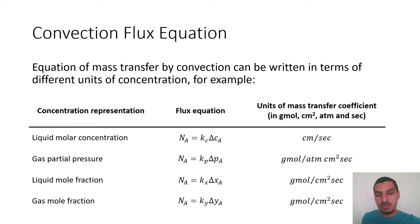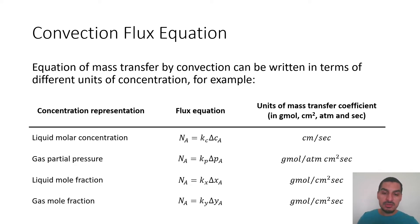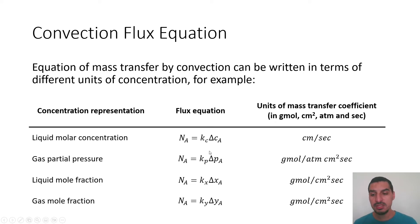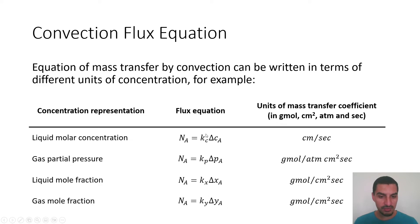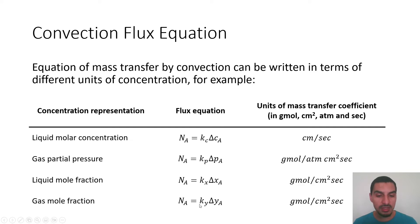In mass transfer, there is one more level of detail not present in heat transfer, which is related to how we express the concentration or concentration difference. We can express liquid concentration as concentration or mole fraction, and gas concentration as partial pressure or concentration. So the driving force may have different units, but the flux is always moles per unit area per unit time. That's why the units of the mass transfer coefficient will change, giving different shapes of the equation depending on the driving force.